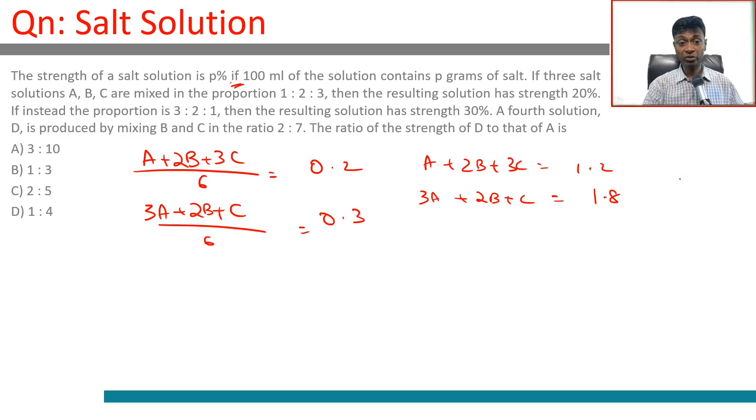D equals 2B plus 7C divided by 9. We need to find the strength of D to that of A - we need to find D by A. That's what we're looking at: B and C are mixed in the ratio 2:7.